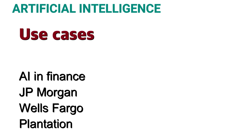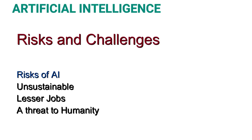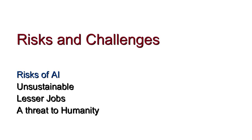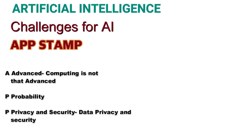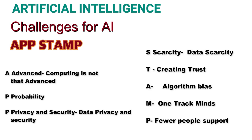Next topic is Risks and Challenges of AI. Risks include unsustainable operations, fewer jobs, and a threat to humanity. The mnemonic for the challenges of AI is 'APP STAMP'. A stands for Advance, P for Probability, the next P for Privacy and Security, S for Scarcity, T for Creating Trust, A for Algorithm bias, M for One Track Minds, and P for Fewer People Support.